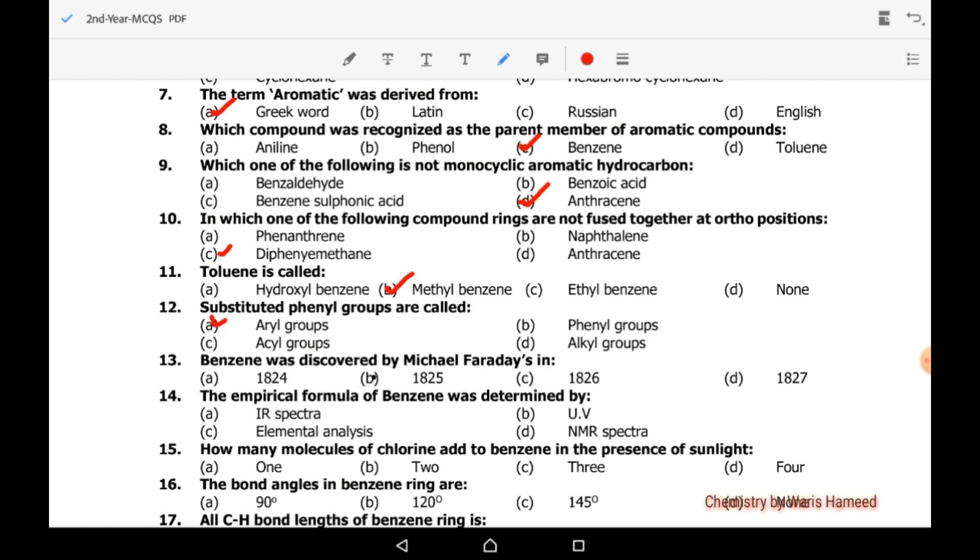Benzene was discovered by Michael Faraday in 1825. The empirical formula of benzene was determined by elemental analysis. How many molecules of chlorine add to benzene in the presence of sunlight? Three molecules of chlorine, which converts benzene into 1,2,3,4,5,6-hexachlorocyclohexane.